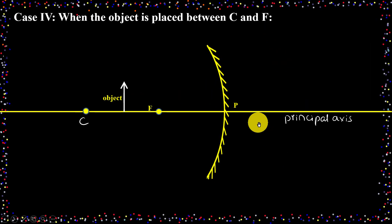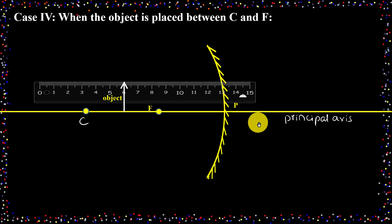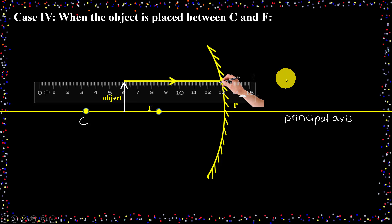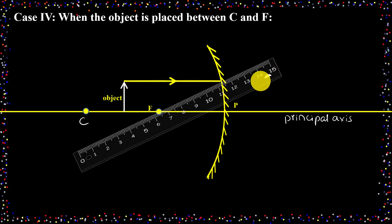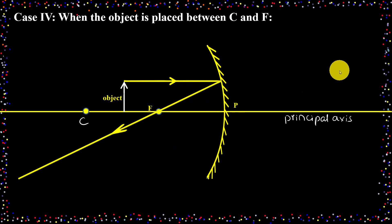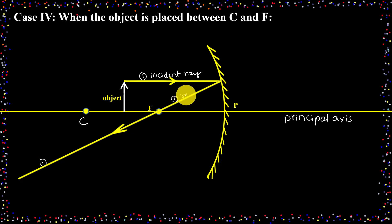Now we are going to draw the light rays to get the image position. The first ray goes from the top of the object parallel to the principal axis. If any light ray parallel to the principal axis falls on a concave mirror, the reflected ray passes through the focus. So I am joining the point of incidence and focus and drawing the line — this will be the first reflected ray.